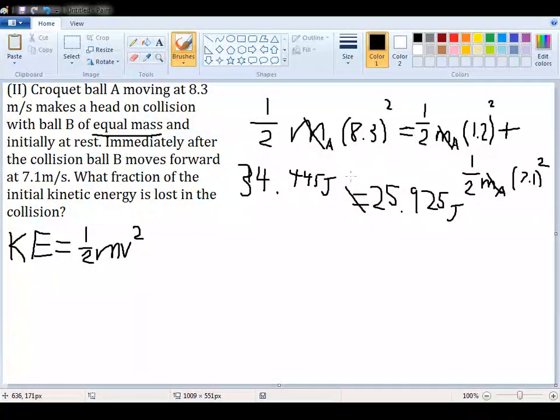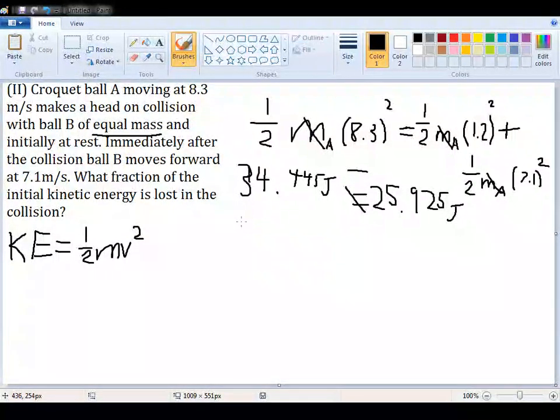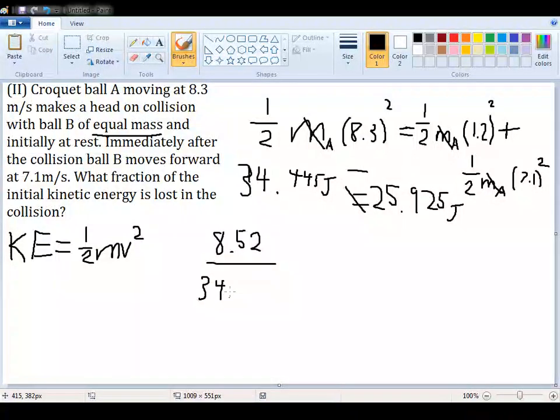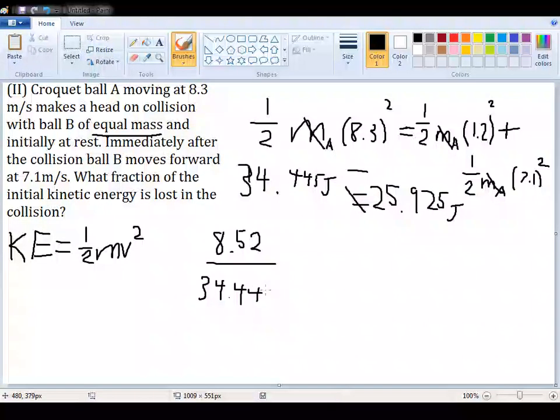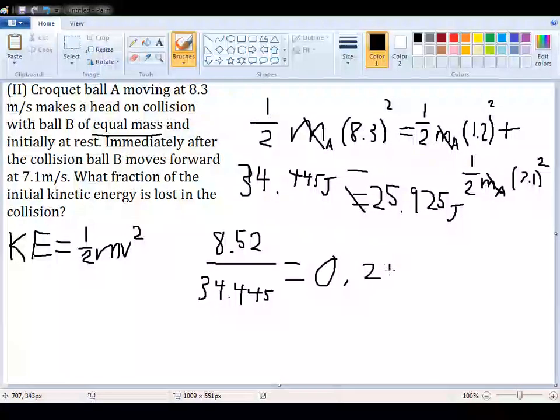So subtracting this value from the other would get us a difference of 8.52. So that is how much energy is being lost, and it's looking for a fraction. So we're going to put that over the original total amount of kinetic energy, 34.445, which putting that into your calculator gets you a number which you can round to 0.25.